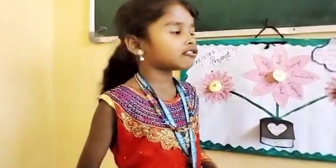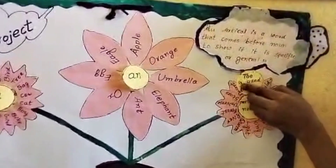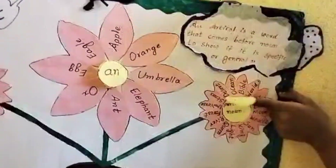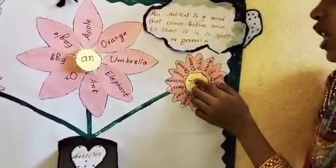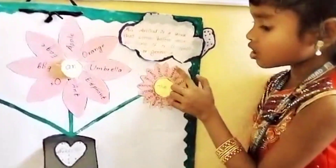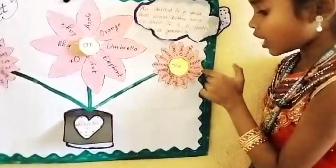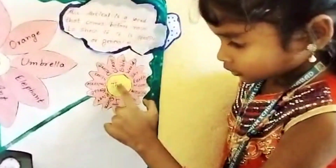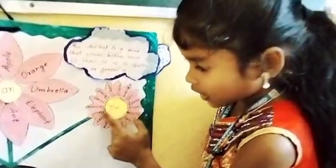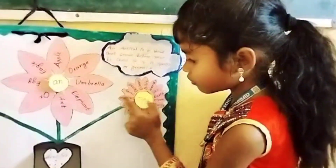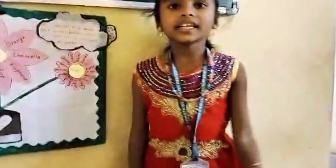When do we use The? The is used before a particular noun. Example: the ocean, the river, the world, the sky, the earth, the moon, the wealth, the sun, the king, the light, the queen, the river, the forest, the universe, the stars, the desert. That's it all about.